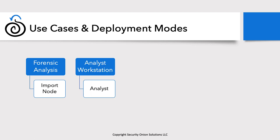The second is an analyst workstation. When working through an incident where you may need to pull out a packet capture or work with a binary, you want to be careful not to infect the underlying workstation. That's why we provide an analyst workstation deployment mode. We also pre-install commonly used tools like Wireshark and NetworkMiner, and it's based on CentOS 7. These two deployment modes do not capture live traffic.